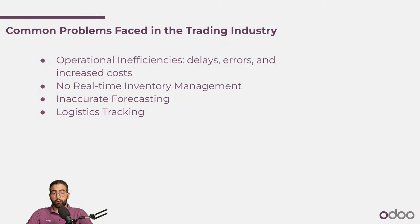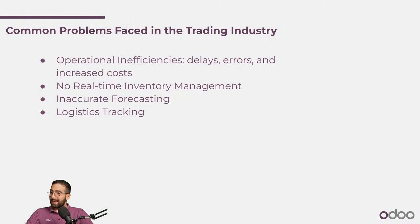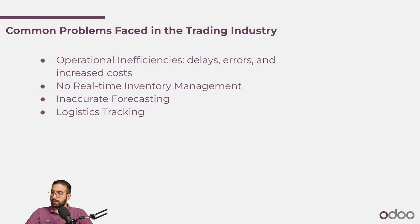Next is inaccurate forecasting — this is very crucial. When I don't have an accurate forecast, I'm limited in how much I can grow the business. The more accurate I am in my forecasting, the more growth I can see for my trading business, my stocks, and my items. Lastly is logistics tracking — I have shipments and products coming in and going out on a daily or hourly basis. It's crucial to know where every single stock item is in the flow, whether I'm tracking deliveries and receipts from suppliers. These tracking gaps create delays and inefficiencies for customers, suppliers, and the business itself.